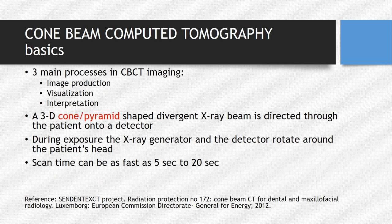The basics to understand are that there are three main processes: image production, visualization, and then interpretation of the image. A 3D cone or pyramid-shaped divergent x-ray beam is directed through the patient into a detector — the sensor which captures the image. During exposure, the x-ray generator and the detector rotate around the patient's head.